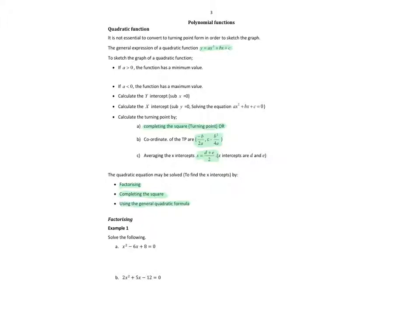Working through a couple of these — solve the following. I'll always try to factorise first. x times x; factors of 8 are 4 and 2, and we need it to be minus 6, so minus 4 and minus 2. So x minus 2 and x minus 4 are the factors, set equal to 0. So x equals 2 or positive 4 are my solutions — the factors of the product of terms, 2 and 4.